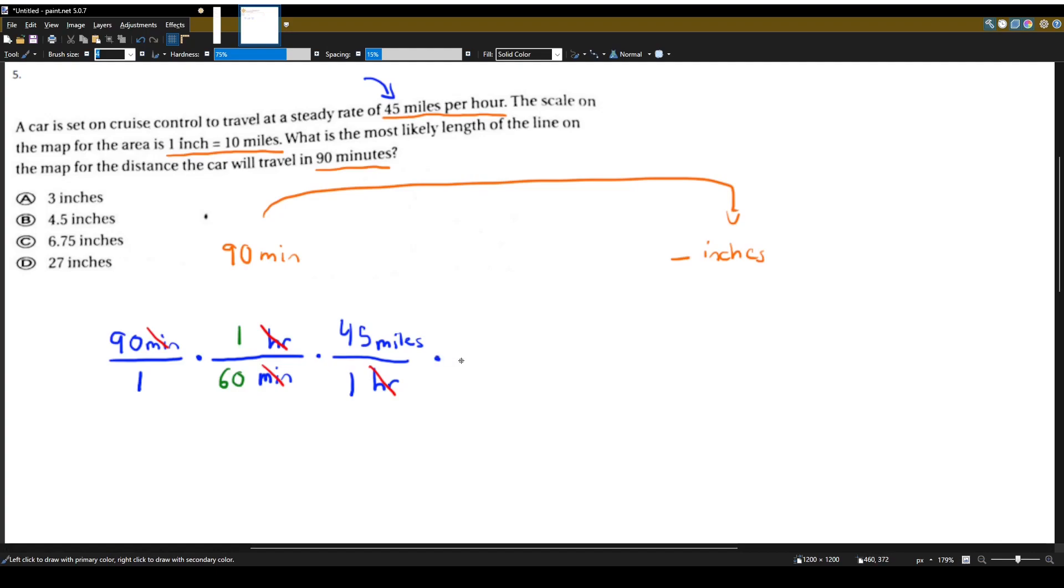I think one more conversion we need. And that's this fact right here. 1 inch is equal to 10 miles. So miles at the bottom. And inches at the top. And 1 inch is equal to 10 miles. The miles will cancel. And we are left with just inches which is what we wanted.